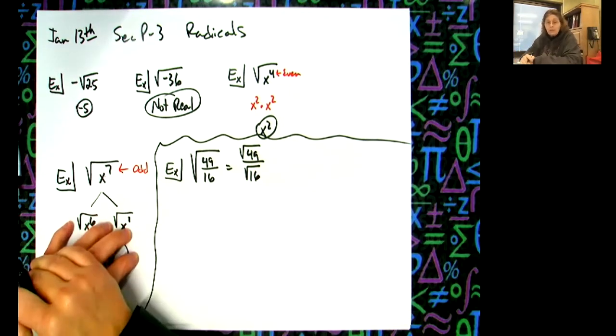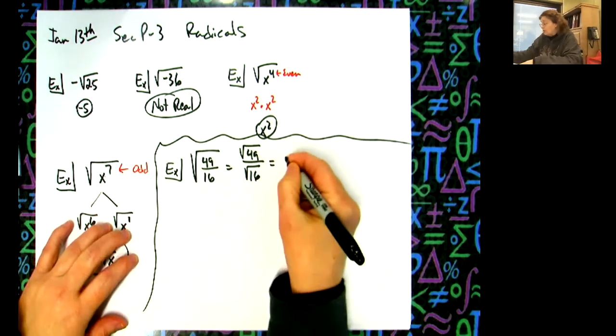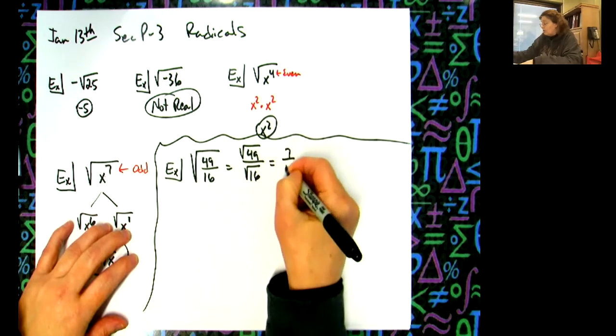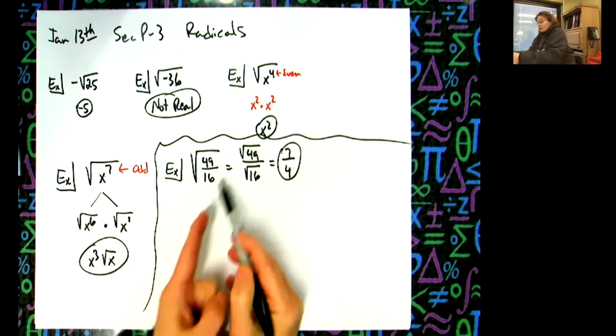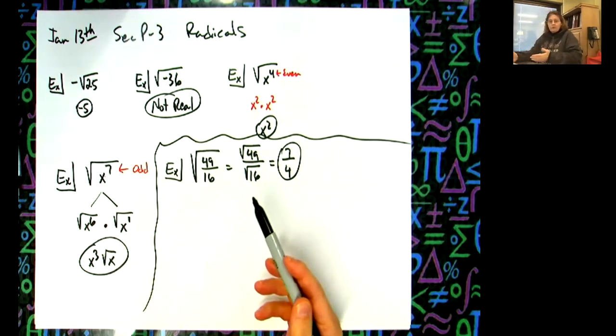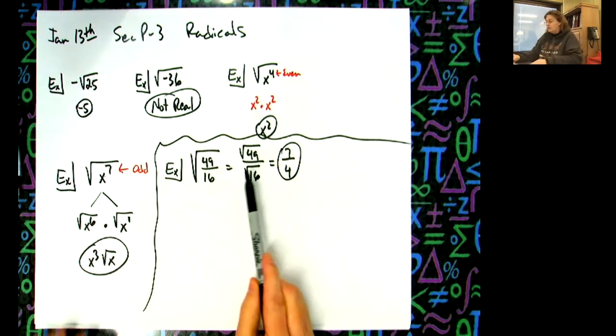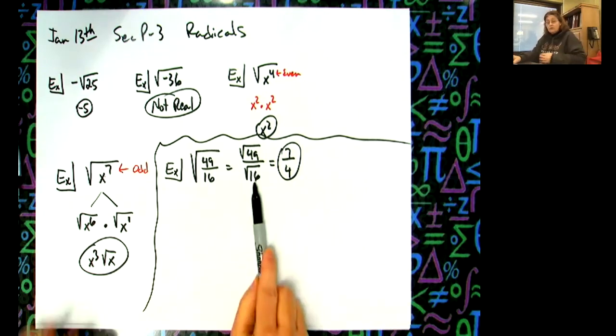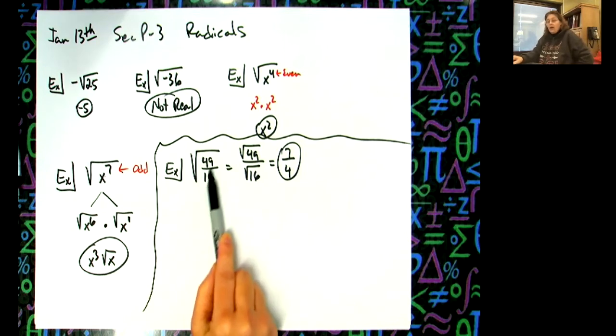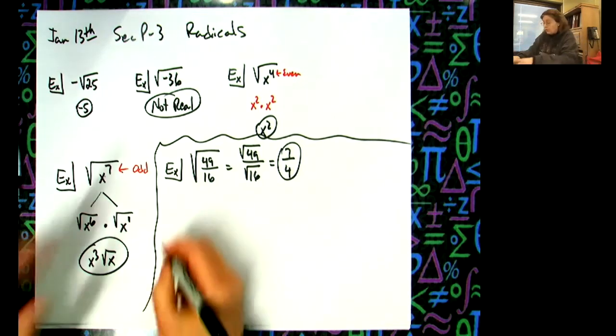Most of you are going to leave that step out because you're just going to go straight to seven over four. But knowing the fact that you can do that allows you to simplify more complicated ones. I can also reverse this. If I have two radicals that are being divided separately, I can put them under one, and then I can algebraically do whatever I want to what's underneath.